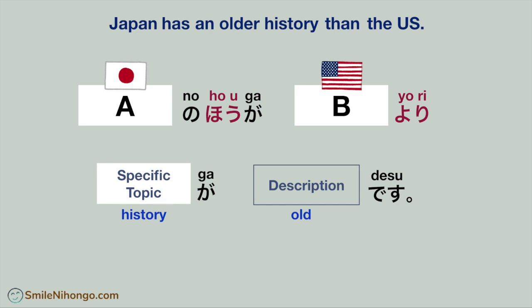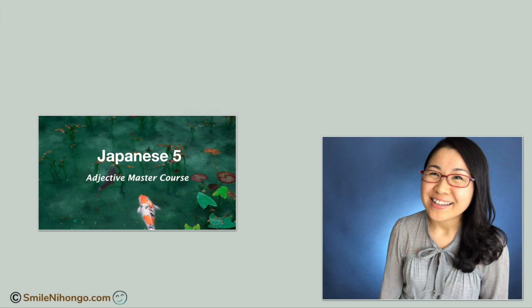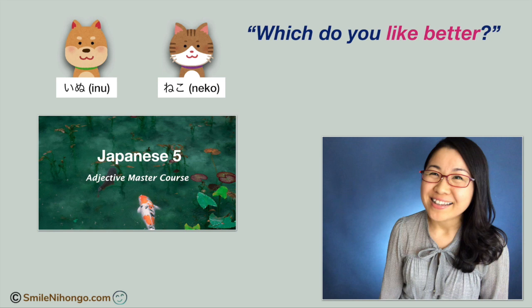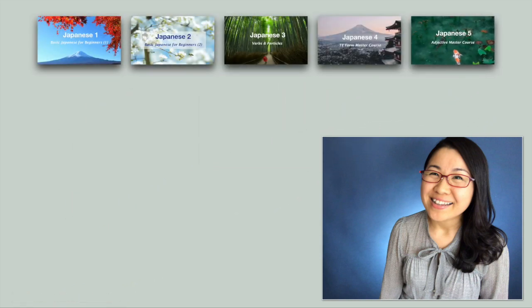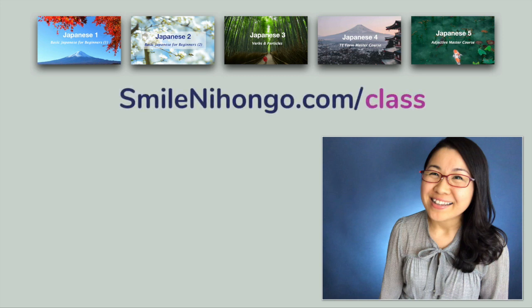I hope you enjoyed today's lesson. Again, this was a sample lesson from my online course, Japanese 5 Adjective Master Course. After this lesson inside the course, you will learn how to ask 'which do you like better?' and answer 'I like this one better,' then move on to the other type of comparison: what do you like best? My online courses are self-paced with no time limit. You can learn Japanese at your own pace with my support. Learn all about my online Japanese school, Smile日本語 Academy, at smileonihongo.com/class. ではまた次のレッスンで会いましょう。